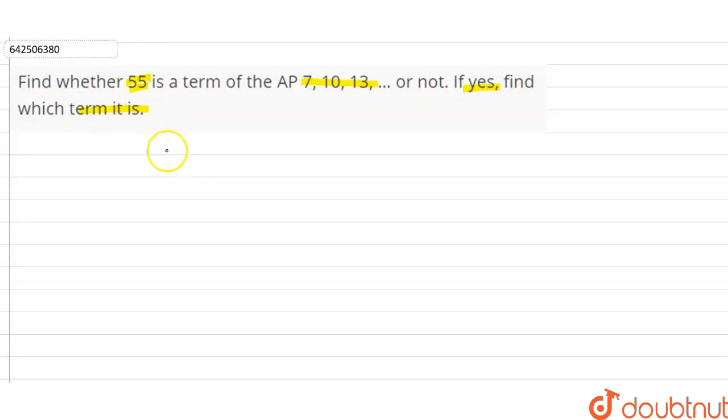So firstly, to check whether 55 is a term of this given AP or not, we have to find the value of n. After finding the value of n, if the value of n is a whole number, we can say that 55 is a term of the given AP. Otherwise, it is not.